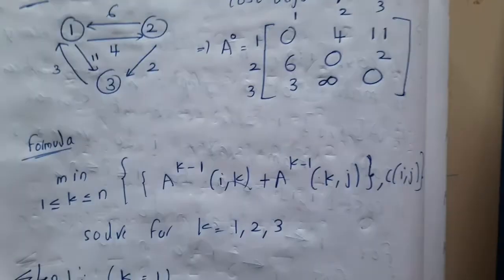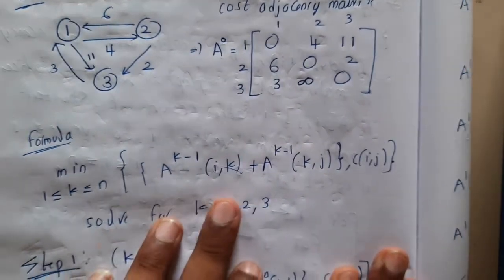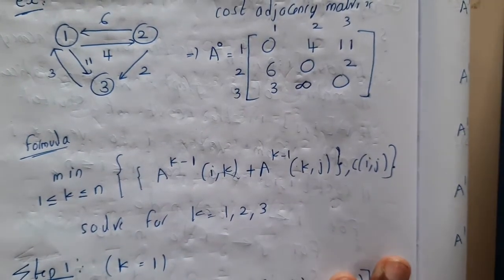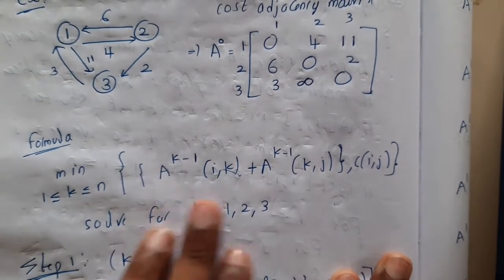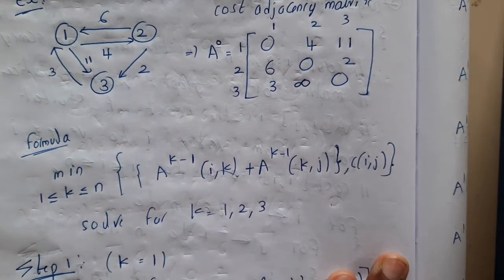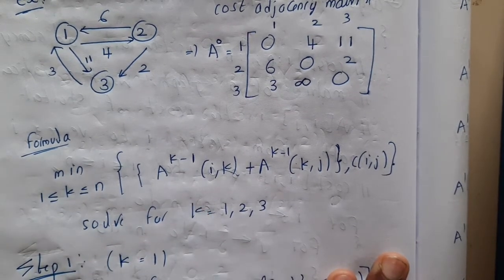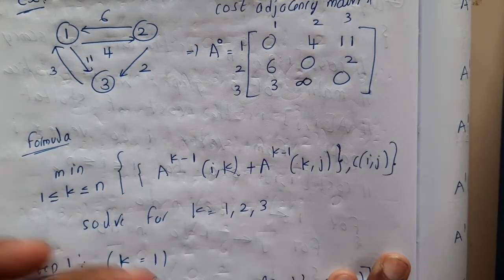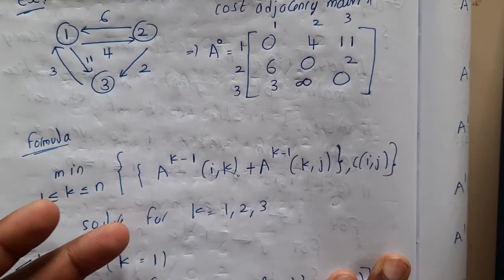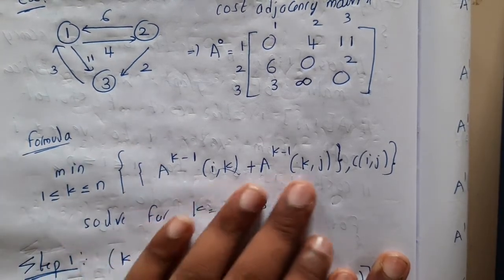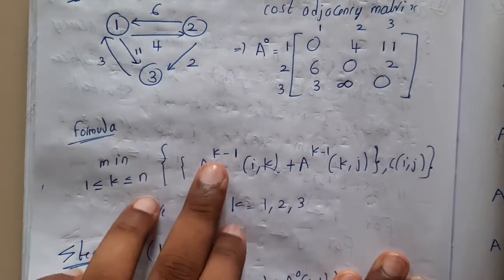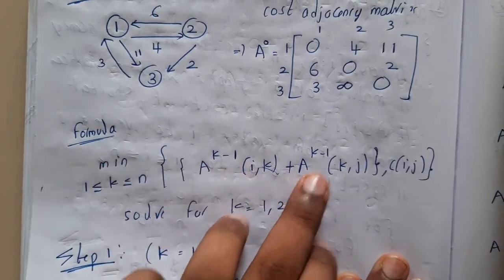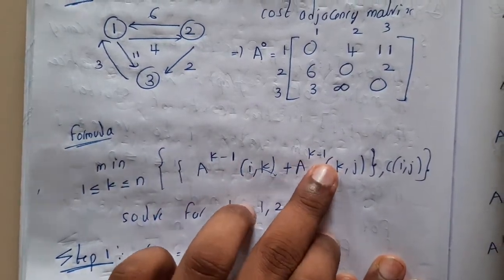Basically, if you all remember, this was the formula which we used. We used our trick to solve it and then we understood how the formula is derived — the same thing we are doing is what the formula represents. It will be checking from pair to pair, covering all possible combinations. The formula is: A^(k-1)[i,k] + A^(k-1)[k,j].